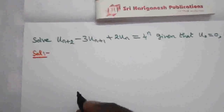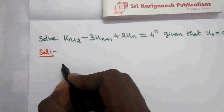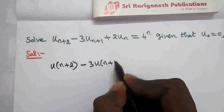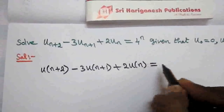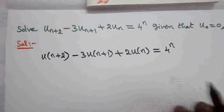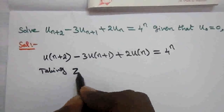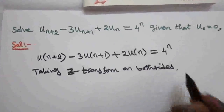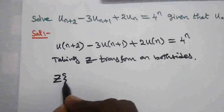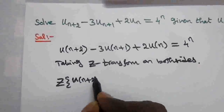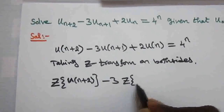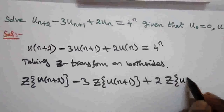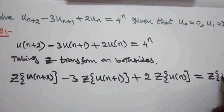I am going to solve this difference equation. The given difference equation is u(n+2) minus 3·u(n+1) plus 2·u(n) equals 4^n. Taking Z-transform on both sides: Z-transform of u(n+2) minus 3 times Z-transform of u(n+1) plus 2 times Z-transform of u(n) equals Z-transform of 4^n.